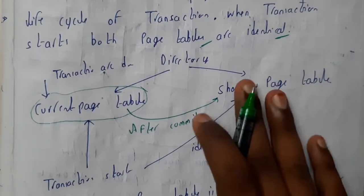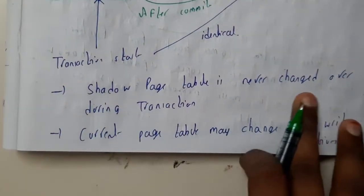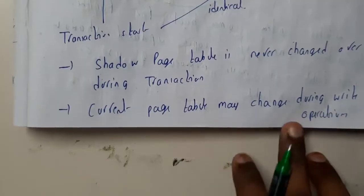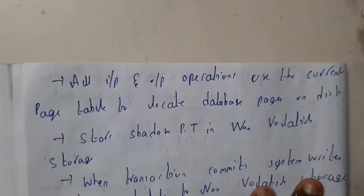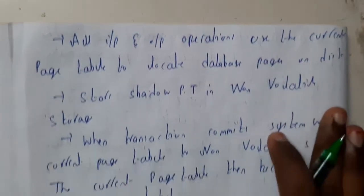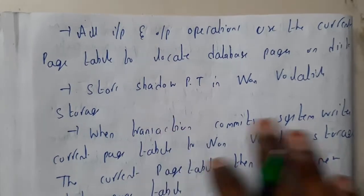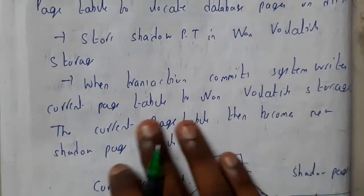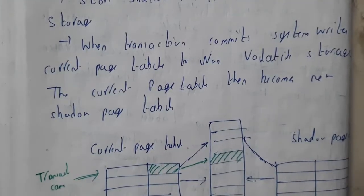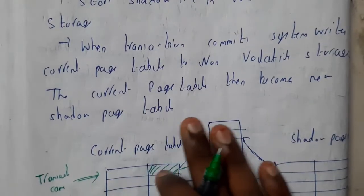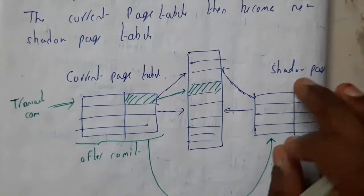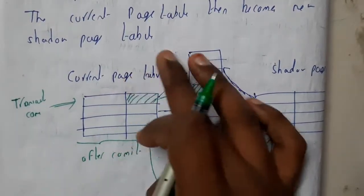The shadow page table is never changed during transactions — it is kept constant. The current page table may change during transactions with operations. All input/output operations are done on the current page table to locate database pages on disk. The shadow page table is stored in non-volatile storage. When a transaction commits, the system writes the current page table data to non-volatile storage, and the current page table then becomes the new shadow page table.